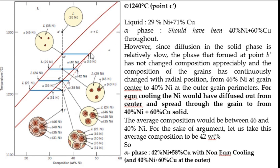As a result, the solidus line shifts by some amount. As per the phase diagram the alpha composition should have been 40% nickel, but since diffusion could not happen due to fast cooling, the alpha composition becomes 42% nickel and rest copper in non-equilibrium cooling.